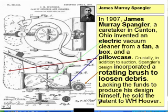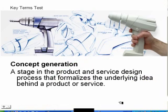Of course, he couldn't get the funds to start off production. He took out a patent — this is a patent drawing — but he couldn't get the money, so he sold his patent to Hoover. Hoover took the concept and made the Hoover machine, which sold so well that vacuum cleaners became known as Hoovers.